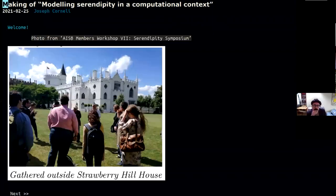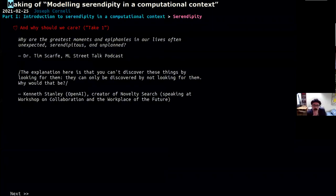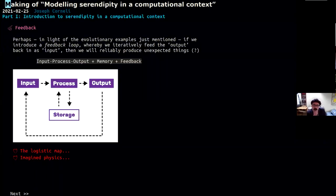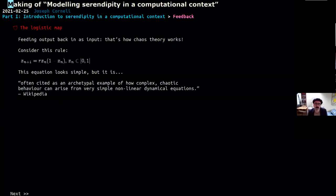So what about feedback? What if we introduce that diagram I showed you above was actually a truncated version of this diagram. So now we've got input, process, output, but we've also got memory and feedback. So we're feeding back our output in as input again. So maybe if we did this, we could reliably produce some unexpected things, which is part of what we were after.